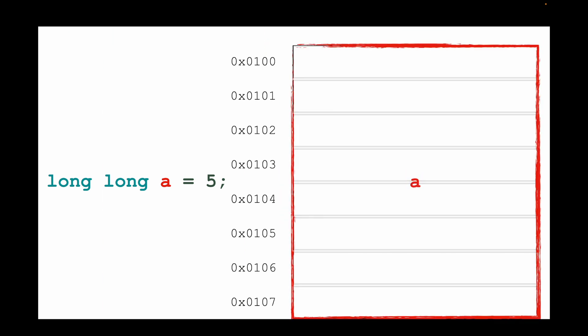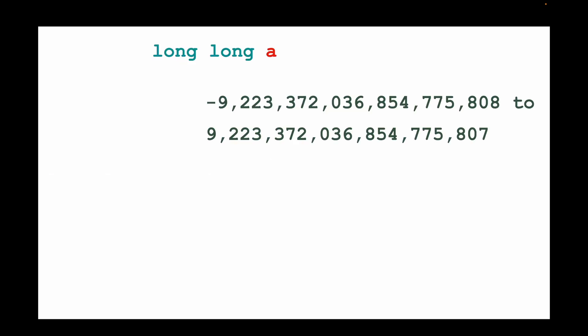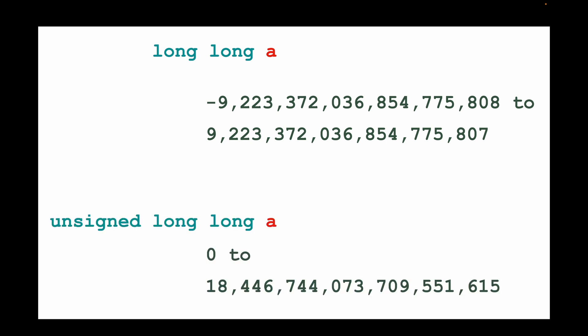If that's still not enough — say you want to store the US national debt — you would need a long long. A long long uses eight bytes to store numbers, ranging from negative nine quintillion to positive nine quintillion. If you want defined overflow behavior, use unsigned long long, which gives you a range of zero to 18 quintillion — big enough to store the US national debt for now. Remember: long long has undefined overflow behavior, just like with signed integers.